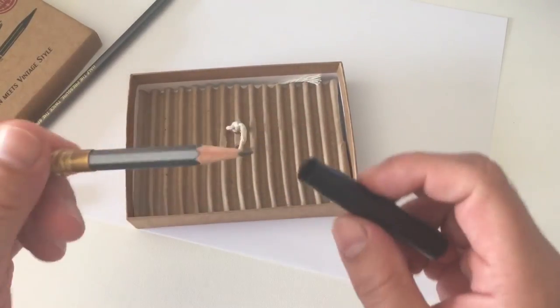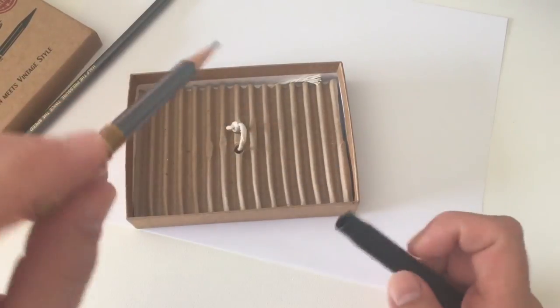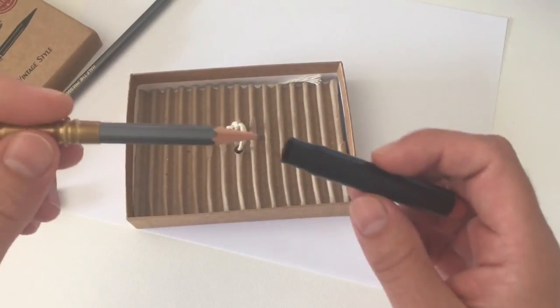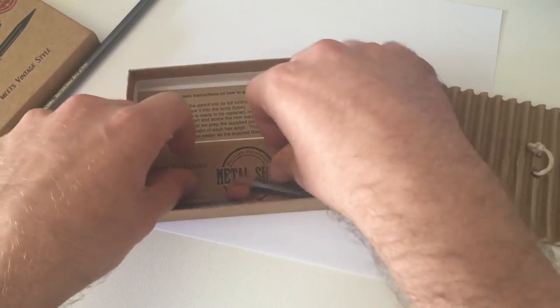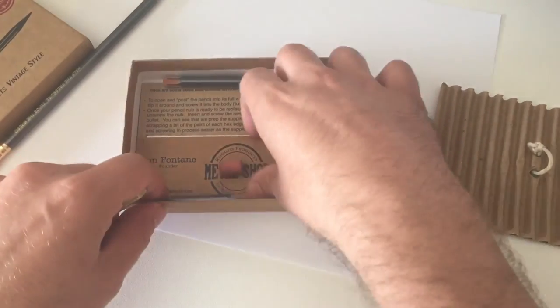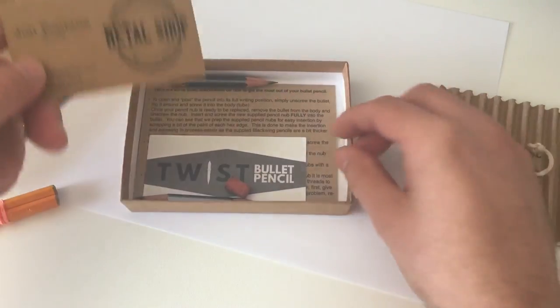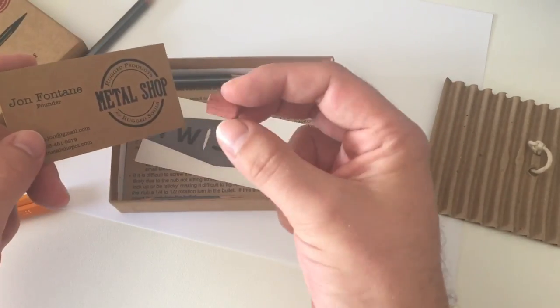It comes with a couple of Palomino Blackwing 602 nubs in the box. It comes with two extra nubs, a business card from John Fontaine, thanks again for sending me the bullet pencil, a sticker, and a replacement eraser.